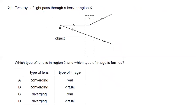Question twenty-one: two rays of light pass through a lens in region X. What type of lens is it and what type of image is formed? After passing through region X the light rays are diverging, so this is a diverging lens. The image is formed on the same side as the object — it is a virtual image. Answer D is the best answer.